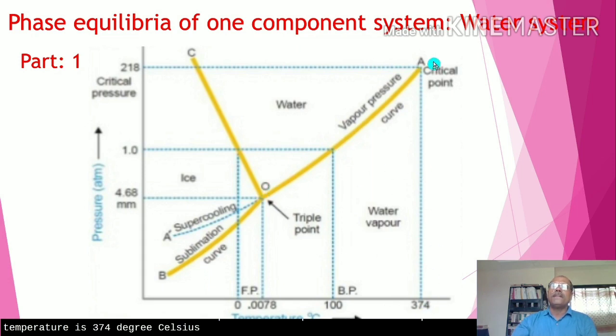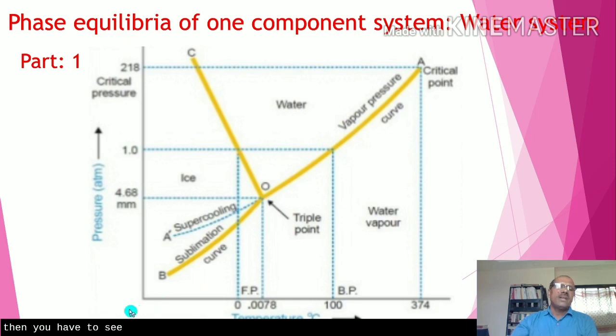This curve terminates at point A, which is the critical point, where the vapor pressure is 218 atmospheres and the temperature is 374°C. Beyond this critical point, the two phases — water and water vapor — are no longer in existence as separate phases.